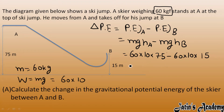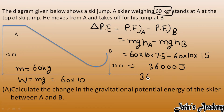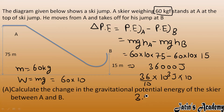Solving this gives 36,000 Joules. Converting to standard form: 36 into 10 to the power 3 Joules, which becomes 3.6 into 10 to the power 4 Joules. This is the change in gravitational potential energy between point A and point B.